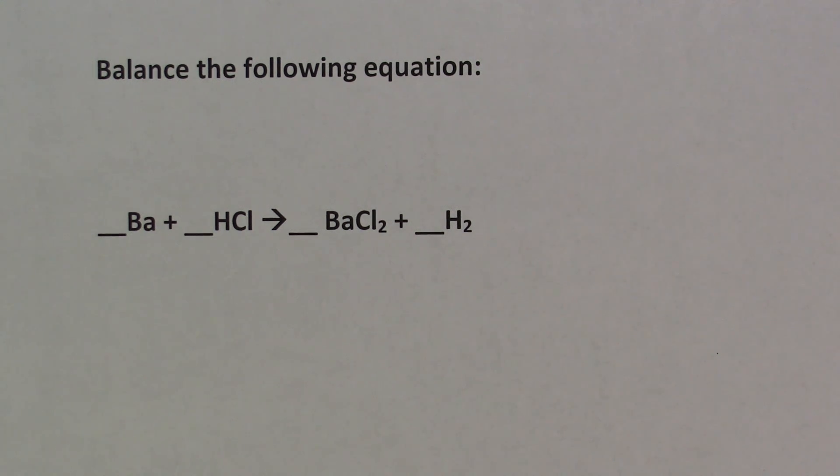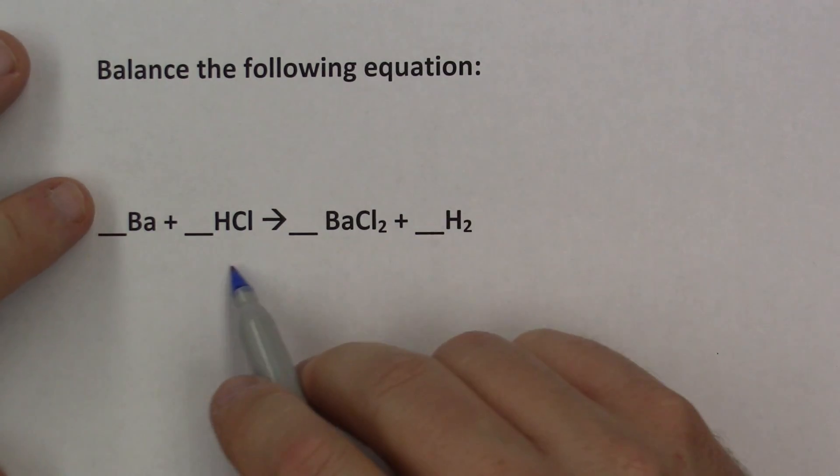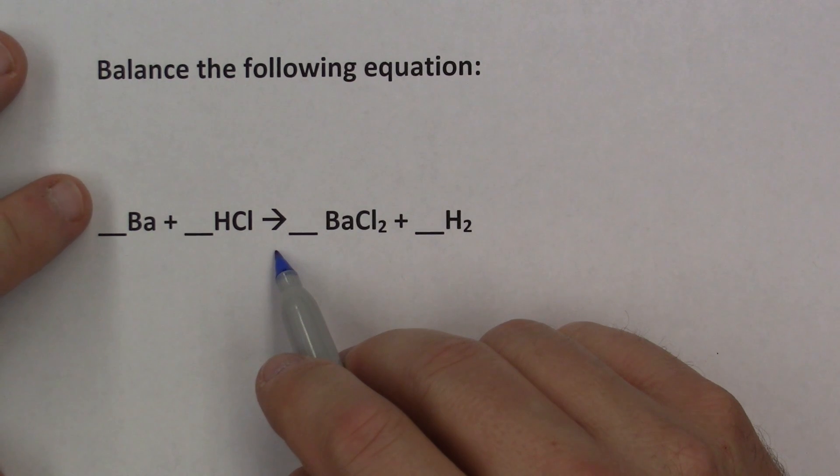Now, to balance an equation, what that literally means is that the atoms on the left must be the same as the atoms on the right and in the same proportions. That is to say, if I have 16 barium on the left, I must have 16 on the right, for example. You can't have less atoms on the left than you do on the right.